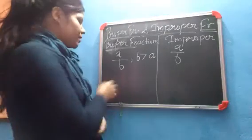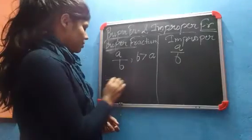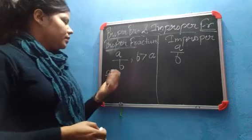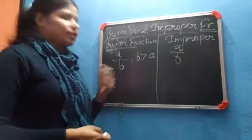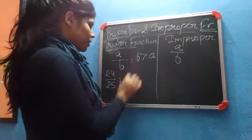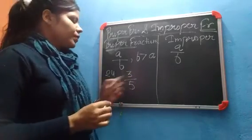Understand what is the example? Suppose 24 upon 25, here denominator is greater than numerator. Next example you can see 3 by 5.